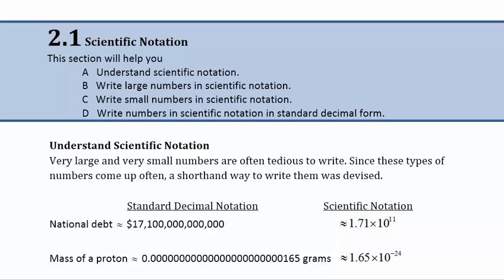Understanding scientific notation: very large and very small numbers are often tedious to write. Since these types of numbers come up often, especially in science, a shorthand way to write them was devised. The first example is the national debt — 17 trillion 100 billion. Instead of writing all those zeros, we can write it in scientific notation as 1.71 times 10 to the 11th power.